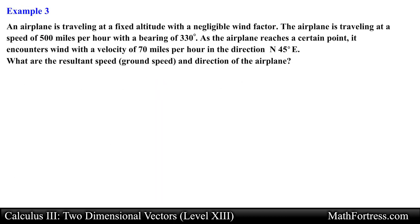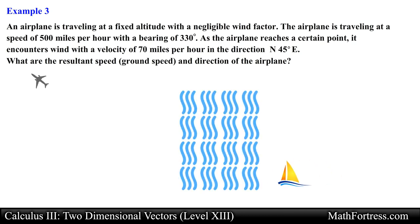Alright, let's go over the final example. An airplane is traveling at a fixed altitude with a negligible wind factor at a speed of 500 miles per hour with a bearing of 330 degrees. As the airplane reaches a certain point, it encounters wind with a velocity of 70 miles per hour in the direction 45 degrees east of north. What are the resulting speed, ground speed, and direction of the airplane? In this problem, the path and speed of the airplane is being altered due to wind, similar to the way a boat's path can be altered by water current.